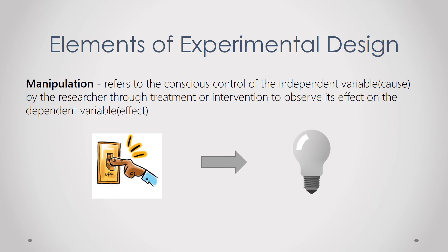There are three elements of experimental design: manipulation, control, and randomization. Manipulation refers to the conscious control of the independent variable by the researcher through treatment or intervention to observe its effects on the dependent variable. The independent variable is the cause; the dependent variable is the effect.